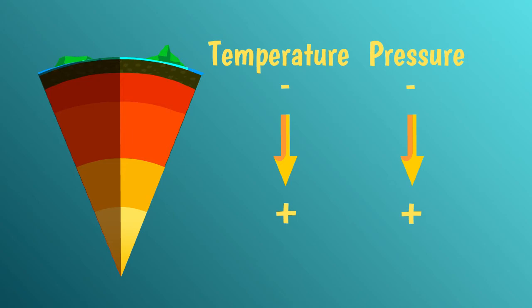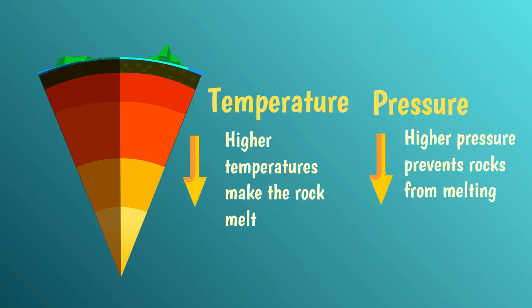Pressure and temperature have an opposite effect on melting. An increase in temperature can cause rocks to melt. On the contrary, increasing the pressure makes melting more difficult. If this seems counterintuitive, consider that usually when something melts it increases in volume. A greater pressure makes this increase in volume much more difficult, and therefore it will take more energy and a greater temperature to melt something that is under pressure.